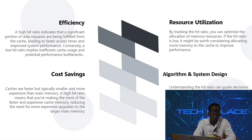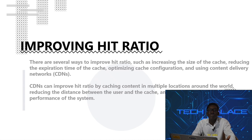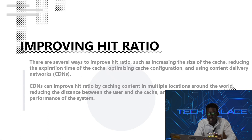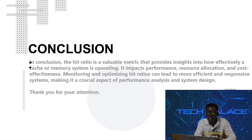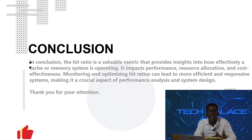Calculating hit ratio is straightforward: it is the number of hits divided by the total number of requests, expressed as a percentage. To improve hit ratio, consider strategies such as optimizing cache size, using smarter cache eviction policies, and prioritizing frequently accessed data for caching. In conclusion, understanding hit ratio, cache hits, and cache misses is crucial for designing efficient computer systems. A higher hit ratio means better performance and user satisfaction.